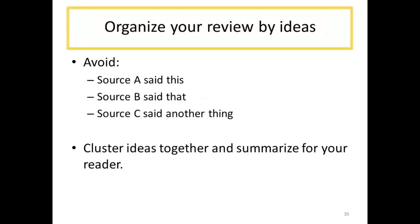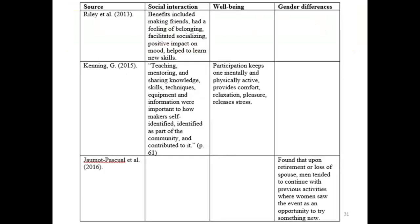When you're ready to write your literature review, organize your material by ideas instead of discussing your sources in random order. This will make it easier for you to write the review and easier for your reader to follow along. Some people find it helpful to create a matrix to organize their sources. In this example, sources are listed along the left column and major ideas or points to be covered in the review appear across the top. Each source is then noted with a brief quote or note, and the matrix allows you to see at a glance where you might have gaps and need to locate additional research.